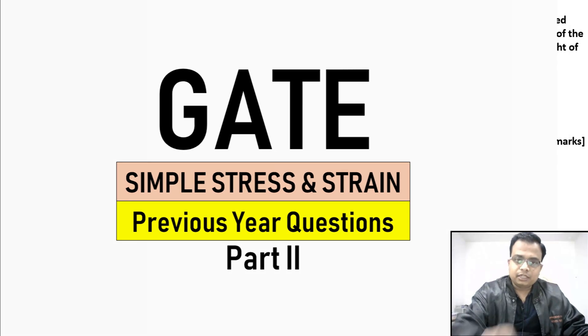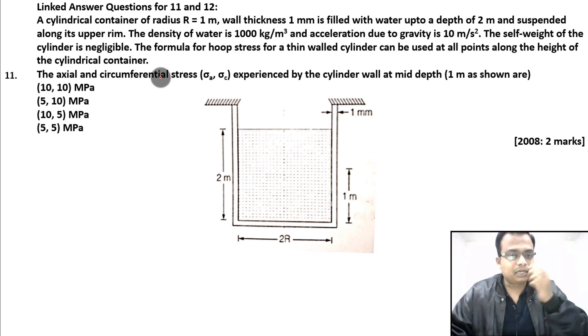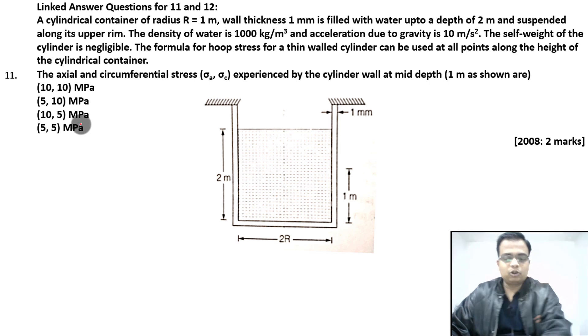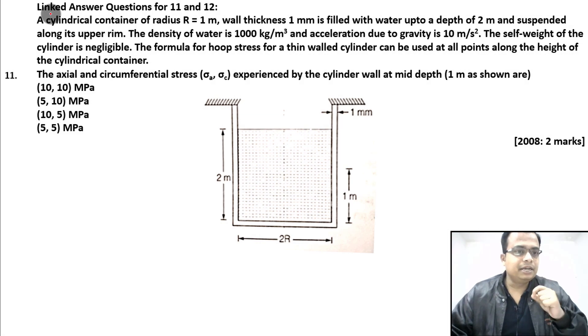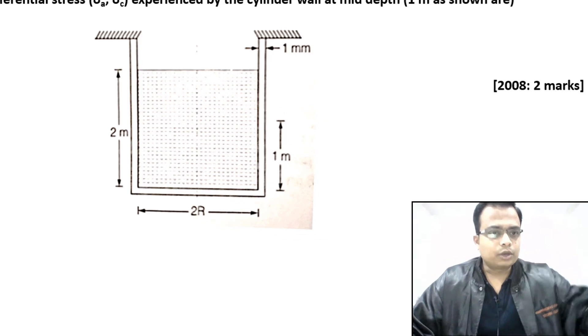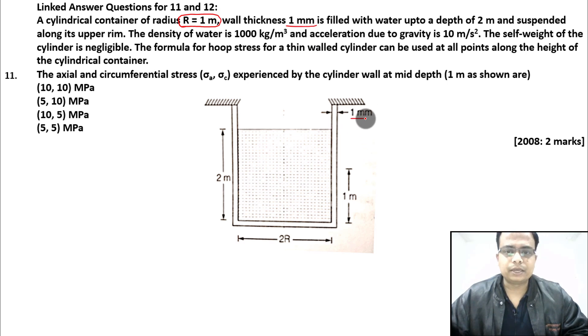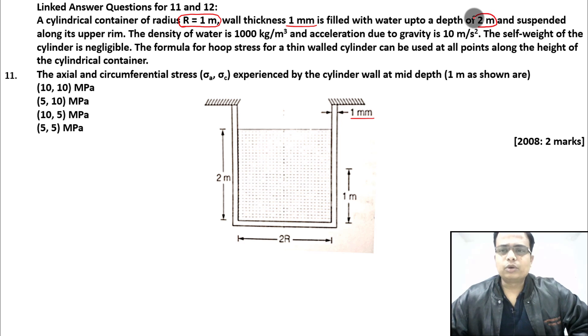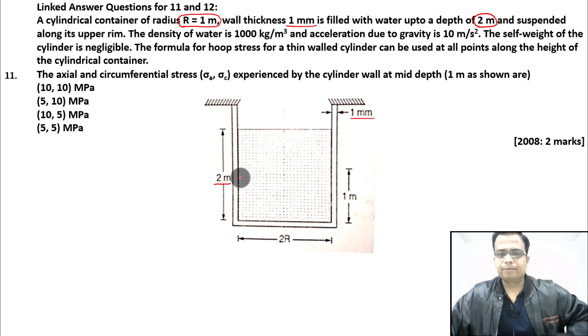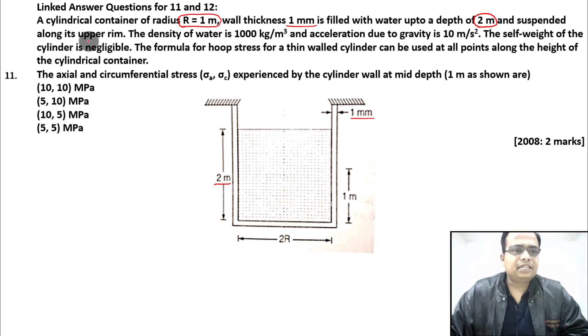The first problem is a two-mark problem. This is a combo problem — there are going to be two parts, questions 11 and 12. We need to read the description. There is a cylindrical container, and what we've been given is a cut section. The water is filled up to a height of two meters. The radius has been given as one meter, and wall thickness is one millimeter.